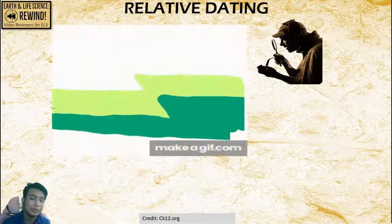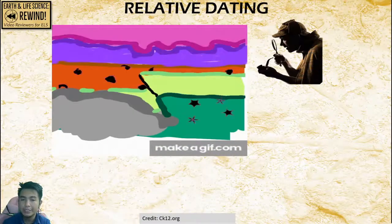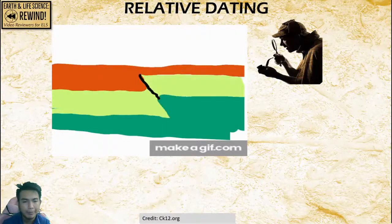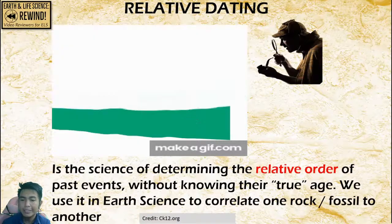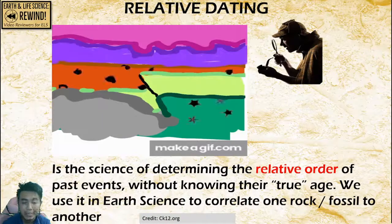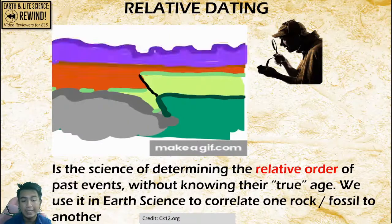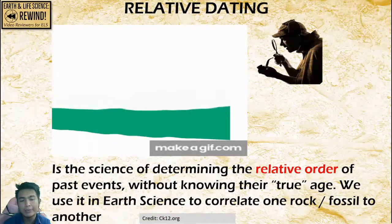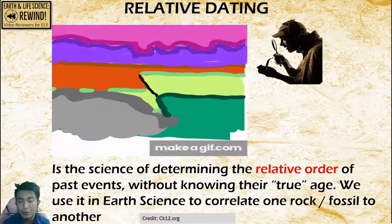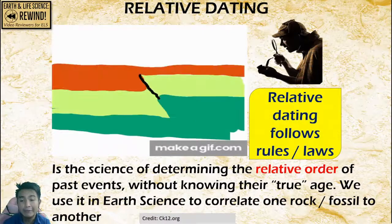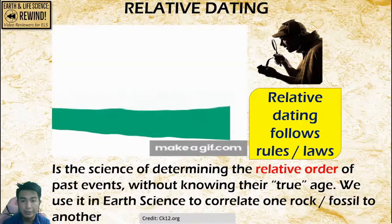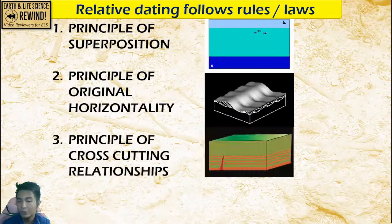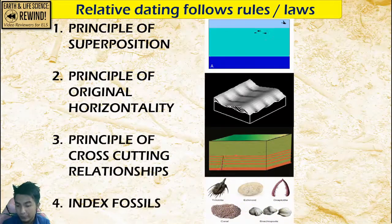Let's start first with relative dating. Here you can see the progression of events starting from green, yellow, red, violet, and deep pink. So you can see there is a relative order of events. Relative dating is the science of determining order without knowing the true absolute age. We use it in earth science to correlate one rock or fossil to another. Relative dating follows these ideas: the principle of superposition, original horizontality, cross-cutting relationships, and the idea of index fossils.